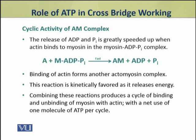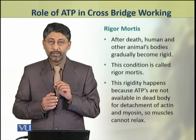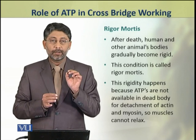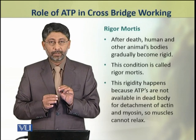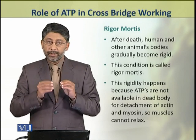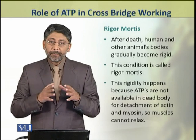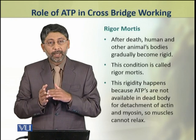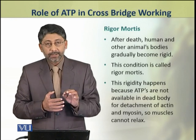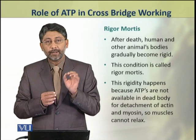Combining these reactions, we can see that there is a cycle of binding and unbinding of myosin with actin, with a net use of one molecule of ATP per cycle. Now we shall discuss the phenomenon of rigor mortis. The dead bodies of humans and other animals become rigid sometime after death. This condition is called rigor mortis.